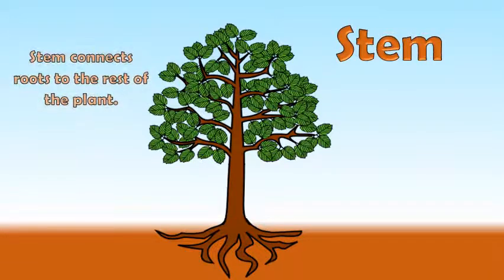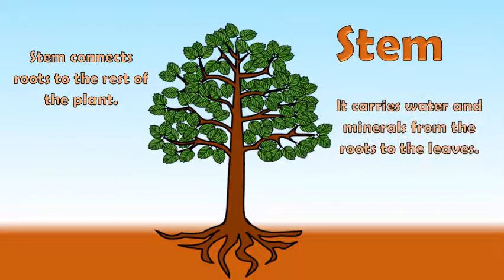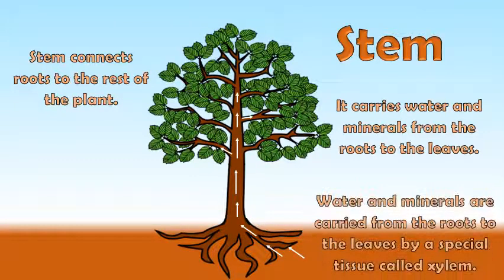Stem connects roots to the rest of the plant. It carries water and minerals from the roots to the leaves. Water and minerals are carried from the roots to the leaves by a special tissue called xylem.